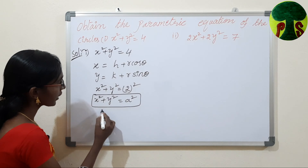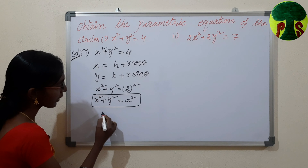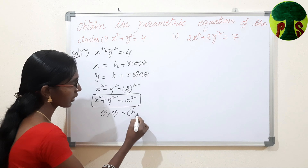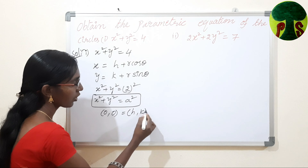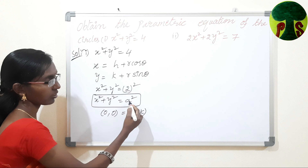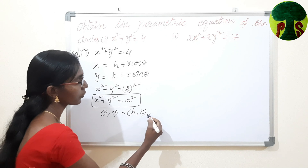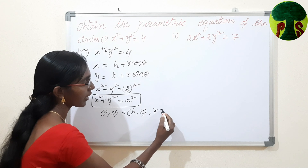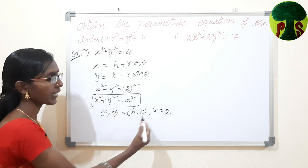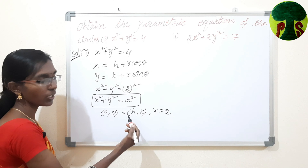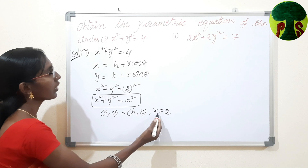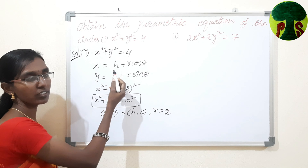Therefore, the center of this circle is (0, 0), which equals h comma k. The radius equals a, which is 2. So r equals 2. Now we need to substitute h, k, and r values in the parametric equations.